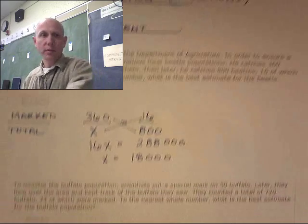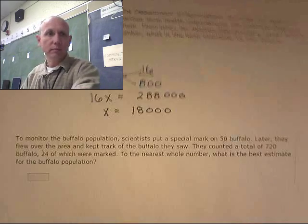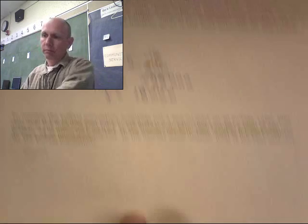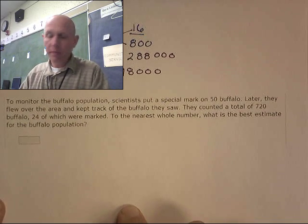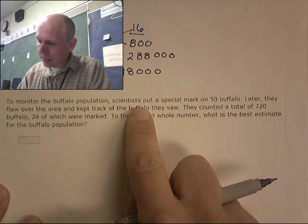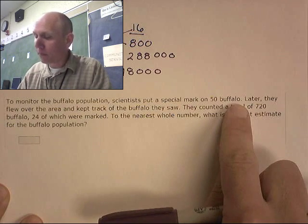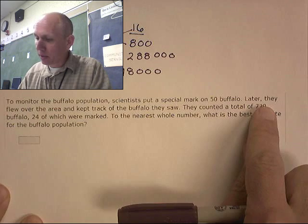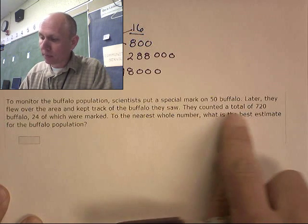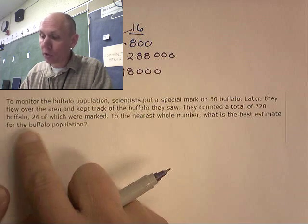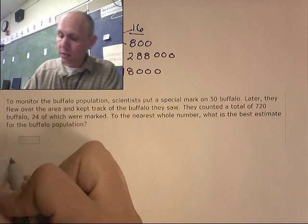To monitor. Oh, let me show you the next one. To monitor the buffalo population, scientists put a special mark on 50 buffalo. Later, they flew over the area and kept track of the buffalo they saw. They counted a total of 720 buffalo, 24 of which were marked.